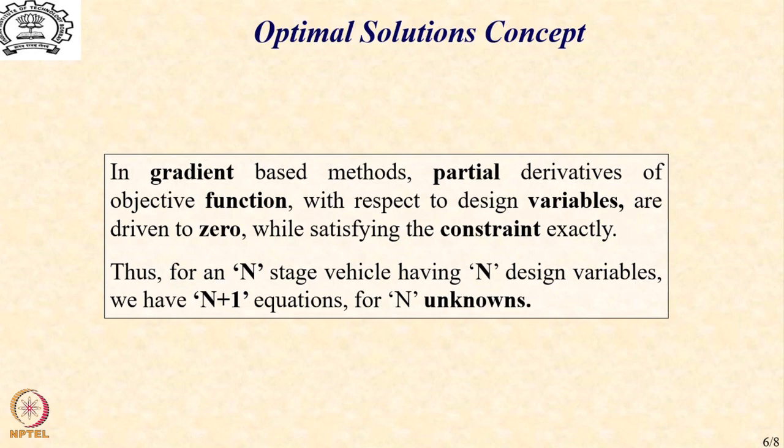Now, we also have a constraint either on v star or pi star that becomes our n plus 1th equation. So, we are going to have n plus 1 equations in which n equations are obtained from the partial derivative exercise. And n plus 1th equation is obtained from the constraint. And this system of n plus 1 equations is in only n unknowns. And you immediately realize that that is something which needs to be now addressed before we can look at the solution itself.